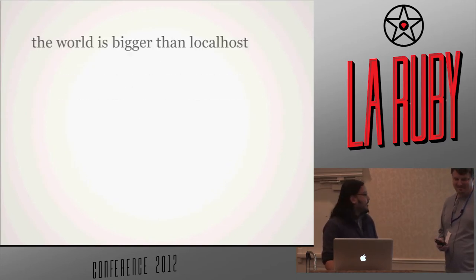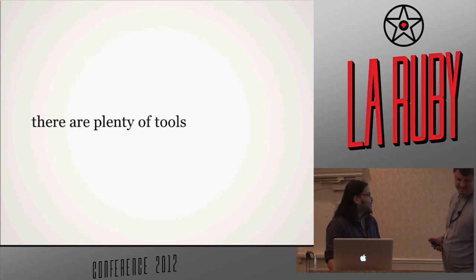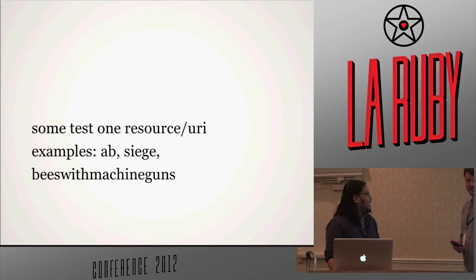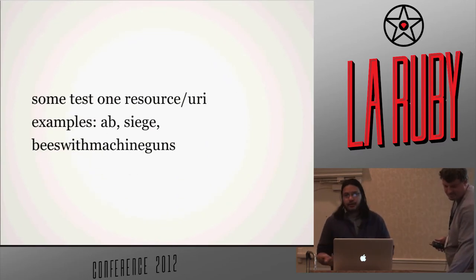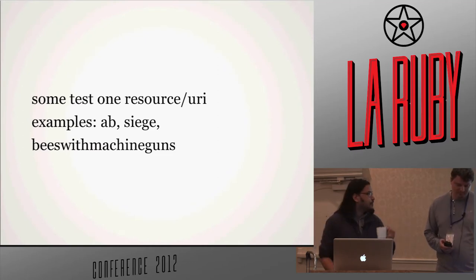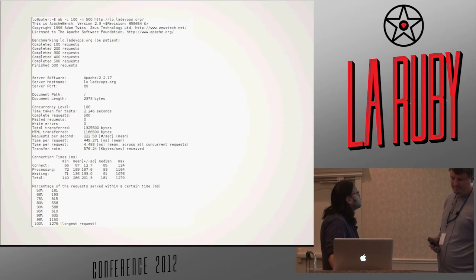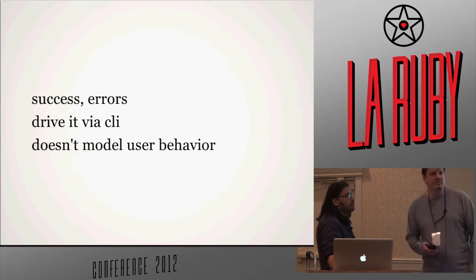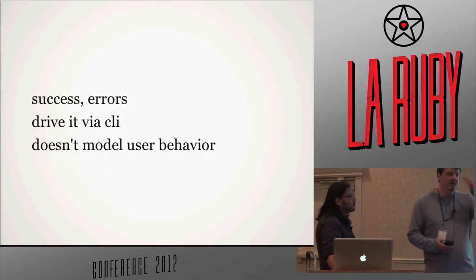Luckily there are plenty of tools — maybe not as many as the unit and functional testing community, but there are some. HB's with machine guns is a wonderful app from the Chicago Tribune folks, where they spin up many small and micro instances to test a server. You've seen this before. Here's output from AB — lots of numbers. Here's output from Siege — lots of numbers. When you're looking at a lot of these, it really gives you a headache.